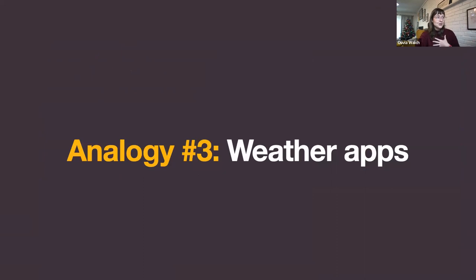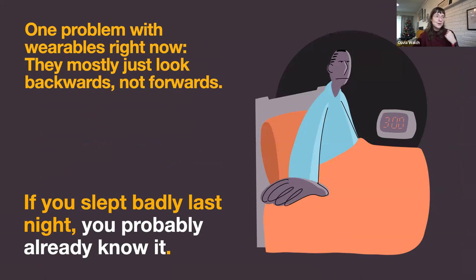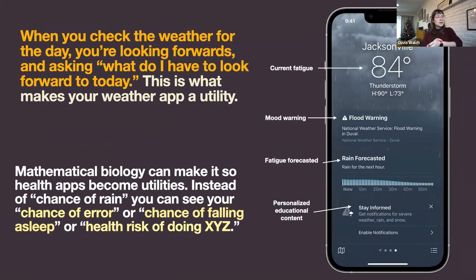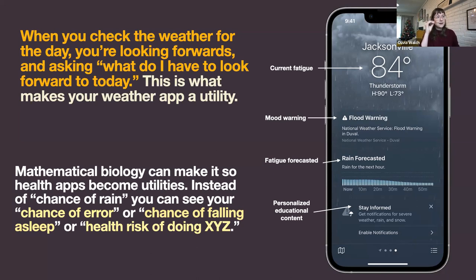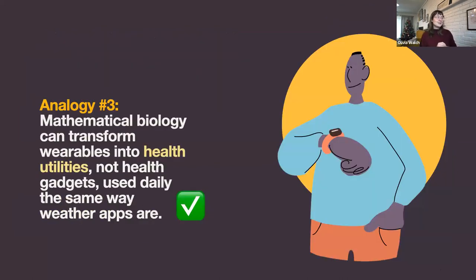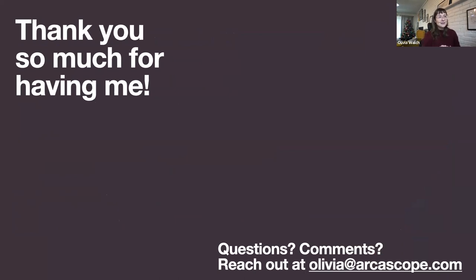Last analogy: math biology can be like a weather app for your body. Wearables right now are kind of like a weather app that tells you yesterday's weather — if you slept badly last night, you already know it. Math modeling lets us look forward and say: here's your current fatigue level, here's your risk over the course of the day, here's a warning that staying up late last night will affect you like this. And here's what you should do to prepare for something three or four days from now. Math biology can help turn wearables into daily health utilities, the same way we use weather apps. Thank you so much for having me.